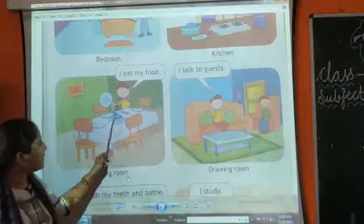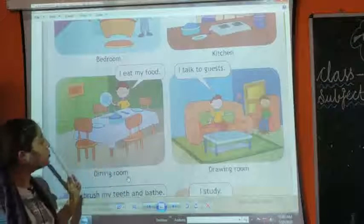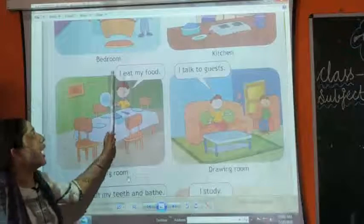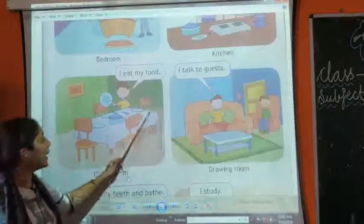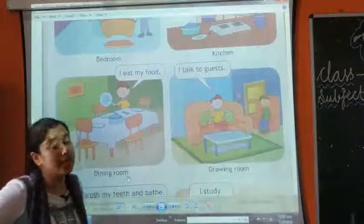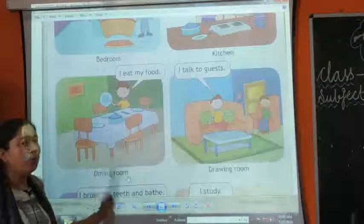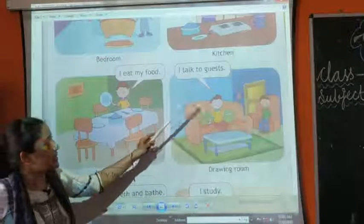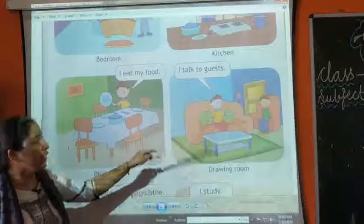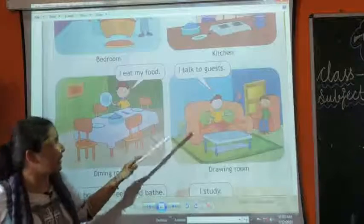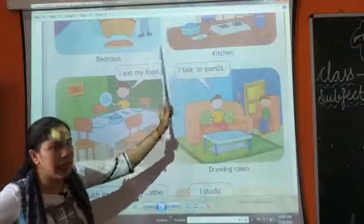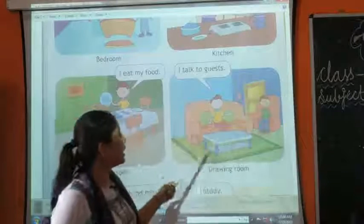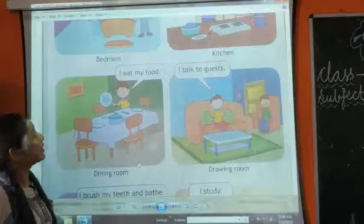We see a boy standing in front of a table and chair. This is the dining room — where we sit and eat our food. This is a drawing room where the sofas and the tables are kept and the guests sit. I talk to guests in the drawing room, where the sofa, table and carpets are kept.